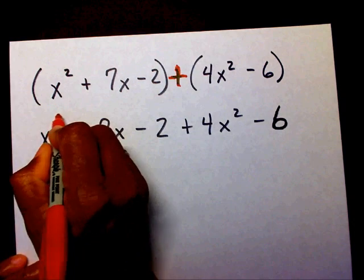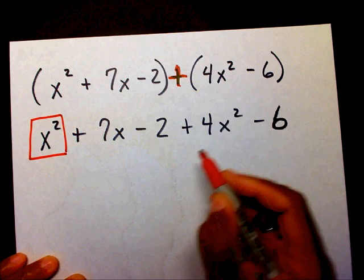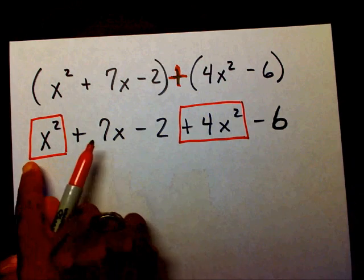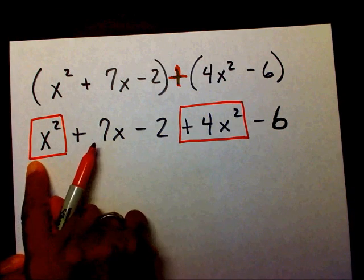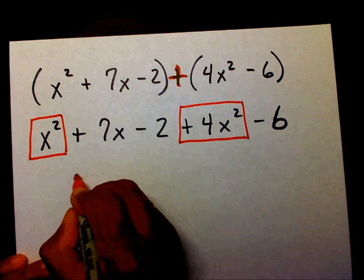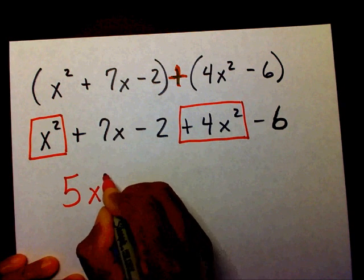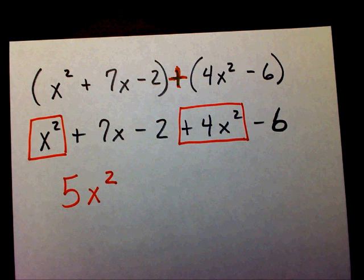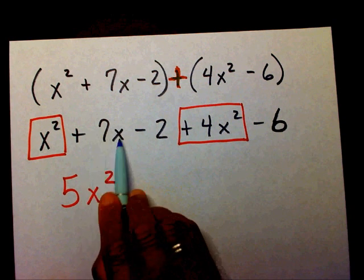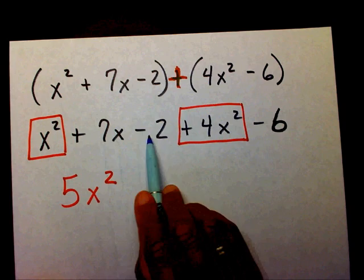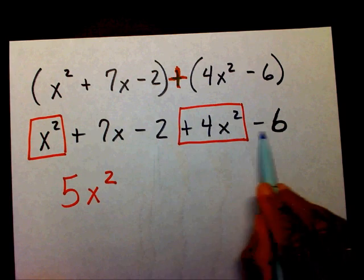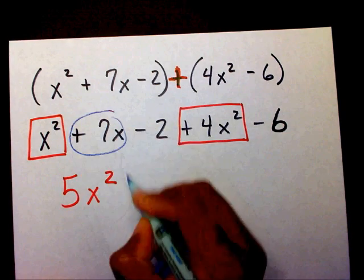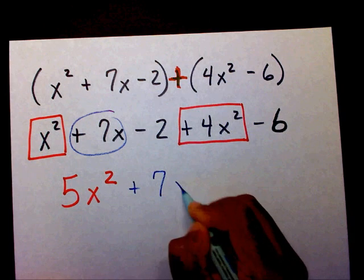If you notice, I have an x squared here and I have a plus 4x squared. 1x squared plus 4x squared is 5x squared. I only have one term with an x, so I'm just going to write plus 7x.